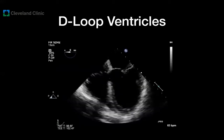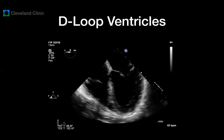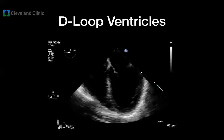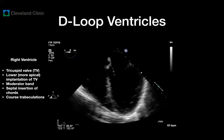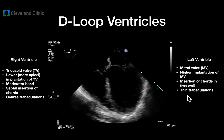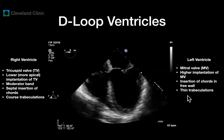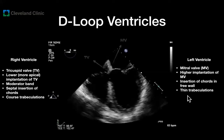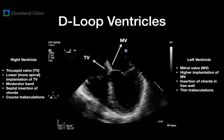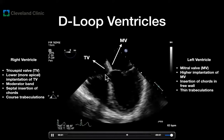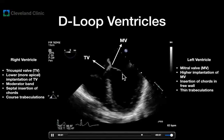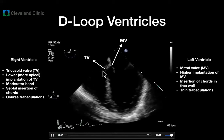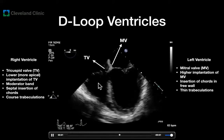After we understand ventricular looping and that the ventricles can be switched in location, we need to be able to differentiate them morphologically. We can use many anatomic clues to identify a morphologic right ventricle versus a morphologic left ventricle. However, one of the easiest features to remember is the lower or more apical implantation of the tricuspid valve compared with the mitral valve. Remember that the general rule is that the AV valve — tricuspid or mitral — follows the ventricle wherever it goes. So the lower valve must be the tricuspid valve, and the associated chamber should be the right ventricle.